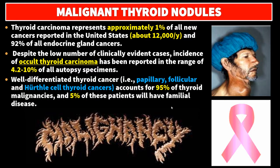Well-differentiated thyroid cancer — that is papillary, follicular, and Hürthle cell thyroid cancers — accounts for 95% of the thyroid malignancies, and 5% of these patients will have familial disease.